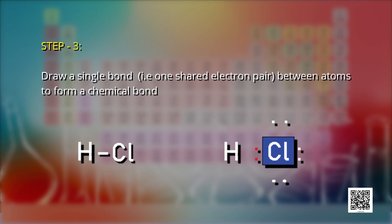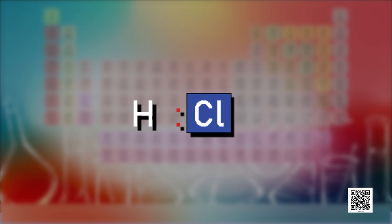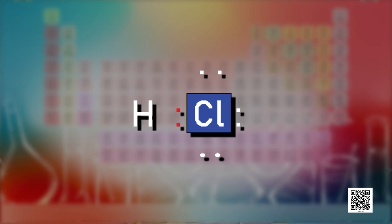Step 3 is to draw a single bond — one shared electron pair between atoms to form a chemical bond. As you can see on screen, there is a single bond drawn between H and Cl. Two dots on the side of HCl show that two electrons have been utilized to form one bond.